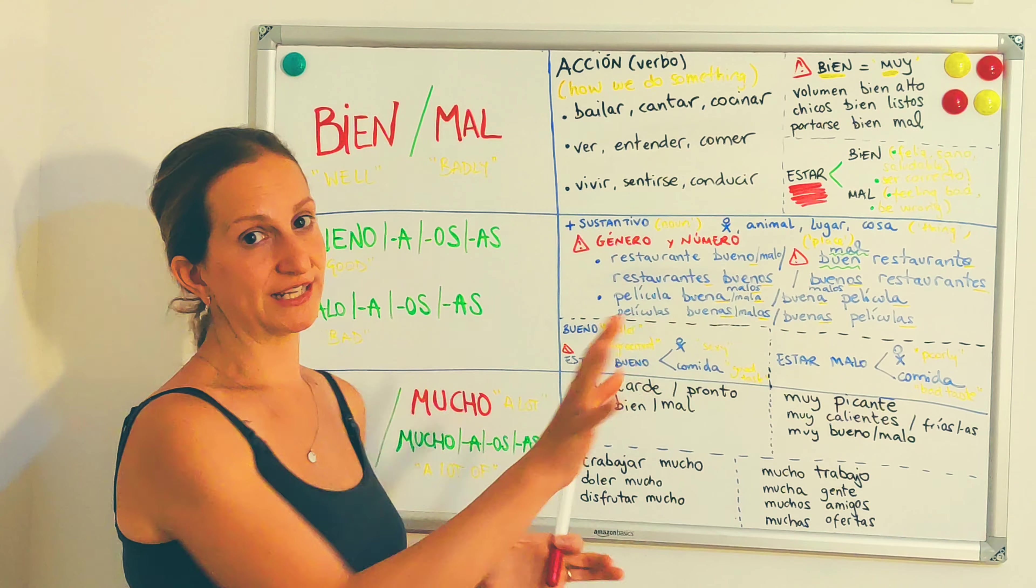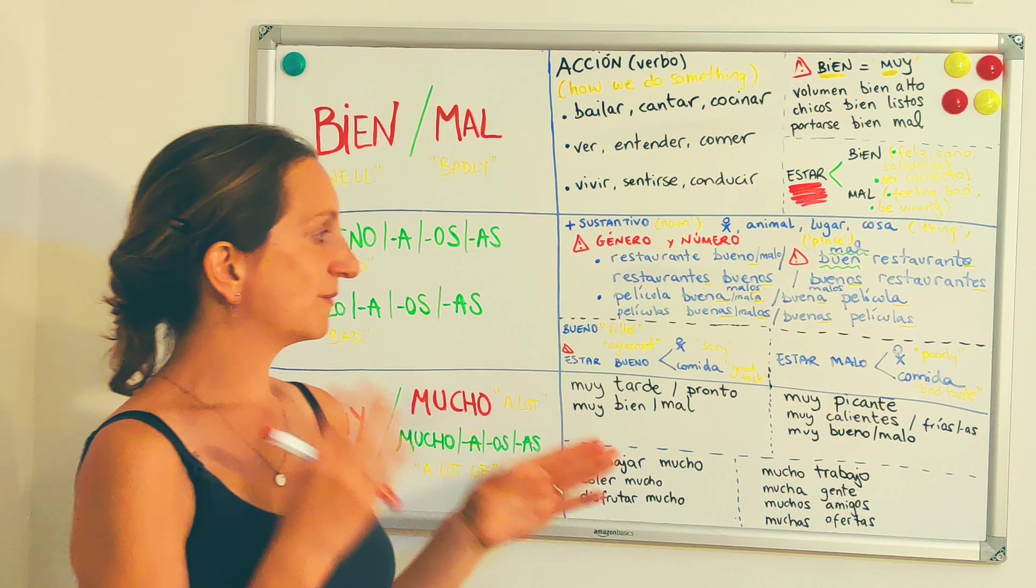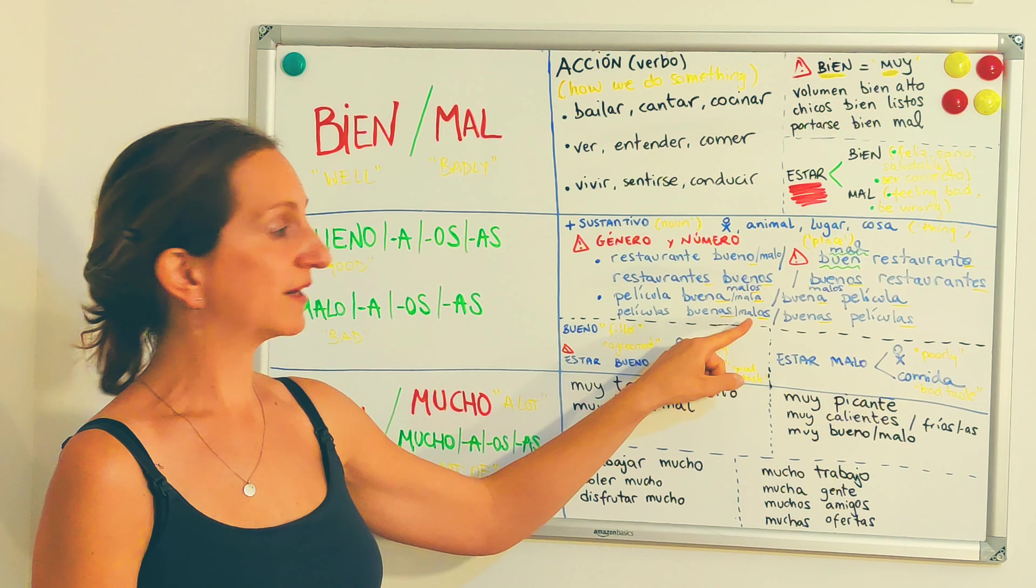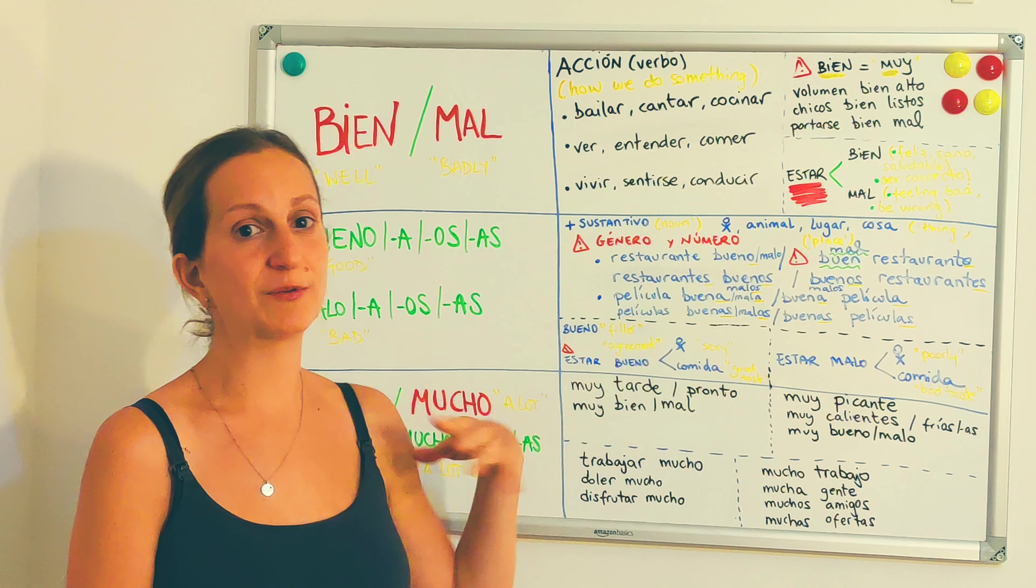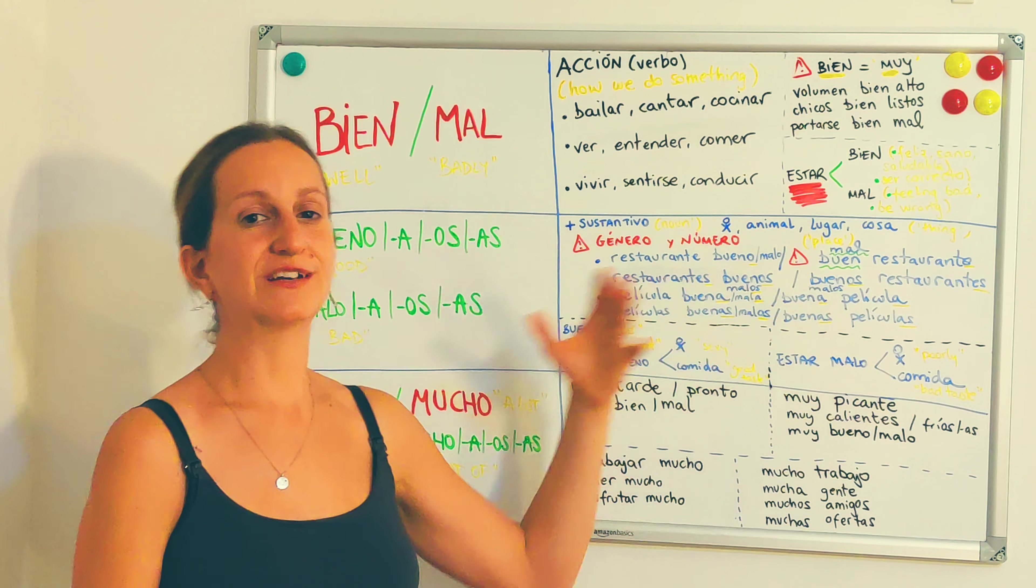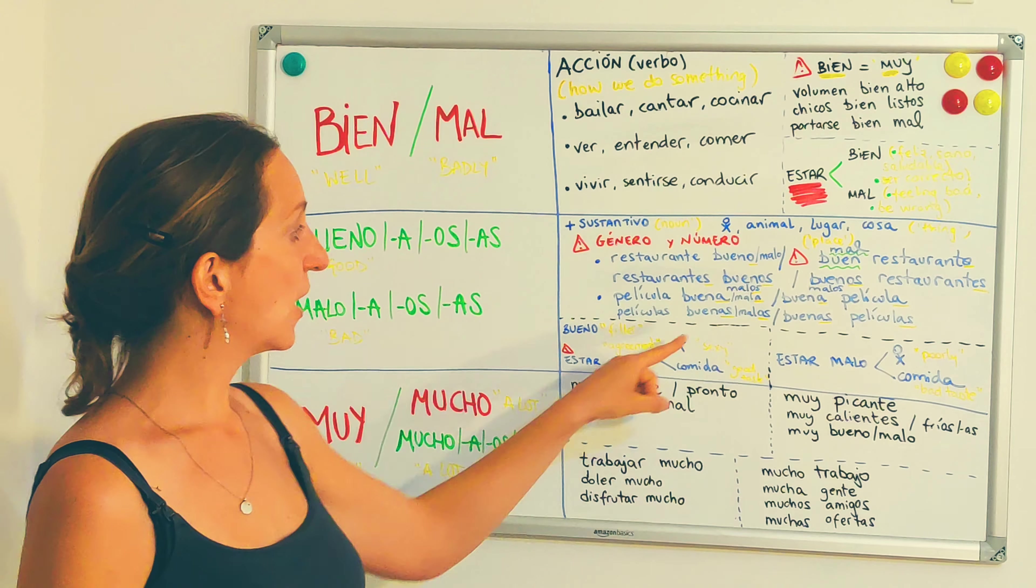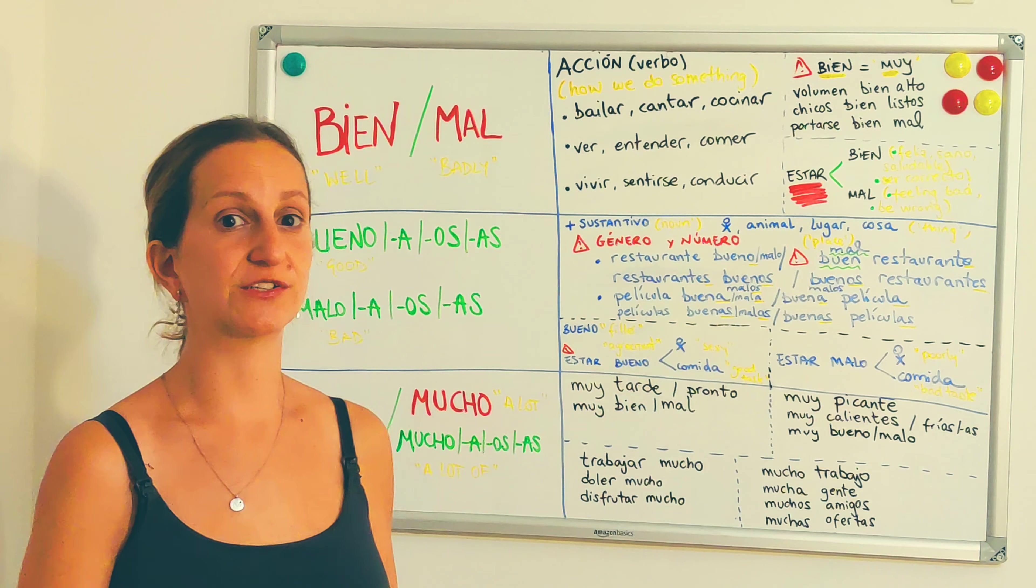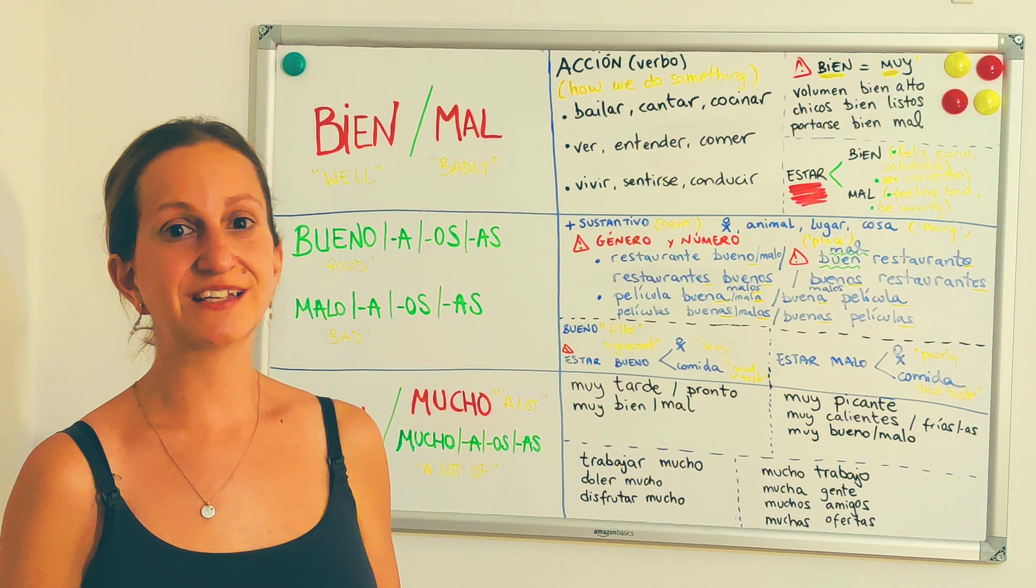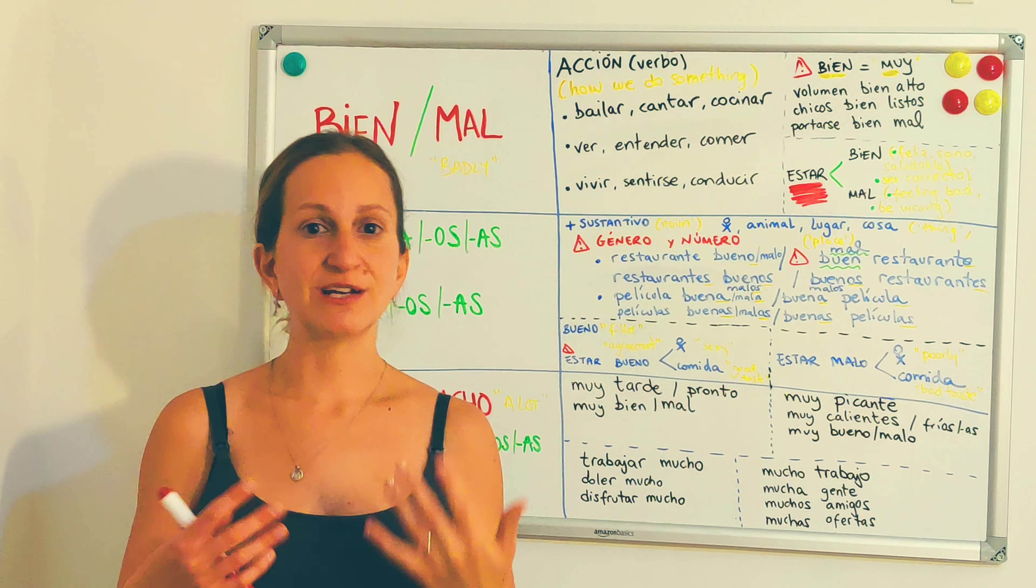Then the rest is quite easy and simple. If it's singular, it remains singular. Feminine. Película. A film. Una película buena. Una película mala. Una mala película. Una buena película. It doesn't change. Or the plural versions. Buenos restaurantes. Malos restaurantes. Películas buenas. Películas malas. Right?